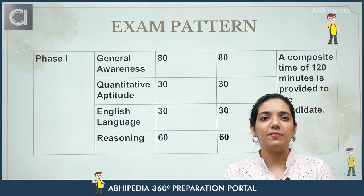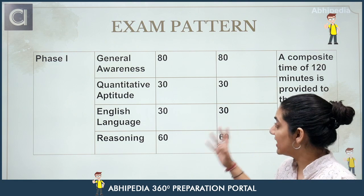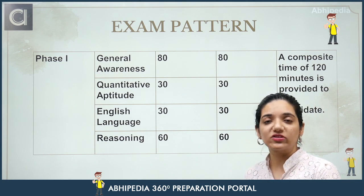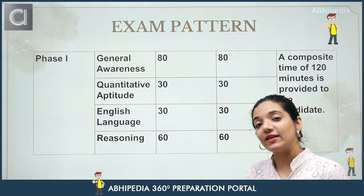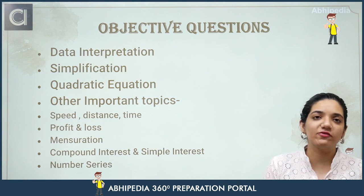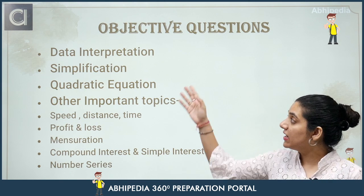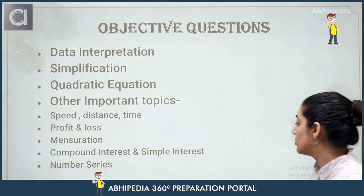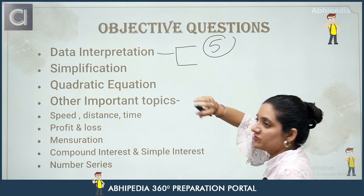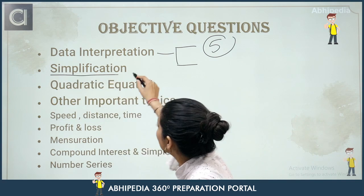Once we understand the exam pattern, let's look at what to focus on in Phase 1. Phase 1 is completely objective. For Quant, number one is Data Interpretation — DI questions come in sets of five. These can be single-variable or double-variable sets. You may get one set or two sets. Recently, mixed questions in DI have been increasing. Simplification-based questions also come as a set of five.